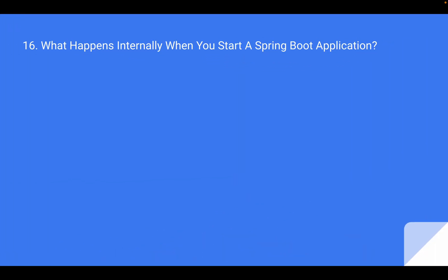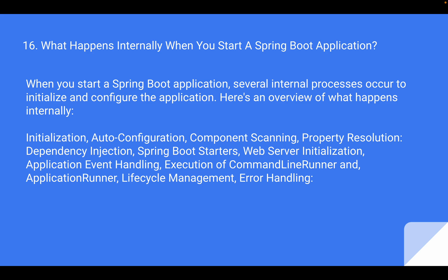Question number 16 which the interviewer asked: what happens internally when you start a Spring Boot application? When you start a Spring Boot application, several processes happen to initialize and configure your application. First is initialization — Spring Boot initializes by creating an instance of the Spring application context. This context is the central part of the Spring framework and serves as a container for managing and wiring the beans. The next step is auto-configuration: Spring Boot leverages its auto-configuration feature to automatically configure various components based on the dependencies present in the classpath.